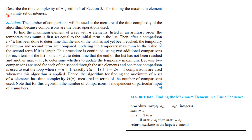Our first example is to examine the complexity of the algorithm for finding the maximum element in a finite sequence of integers, shown here. To find the maximum element listed in arbitrary order, a temporary maximum is first set equal to the initial term. After a comparison, i ≤ n is done to determine that the end of the list has not yet been reached, the temporary maximum and second term are compared, updating the temporary maximum to the value of the second term if it is larger. This procedure is continued using two additional comparisons for each term in the list.